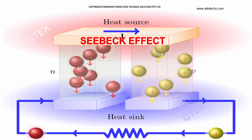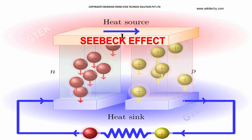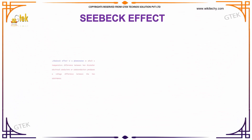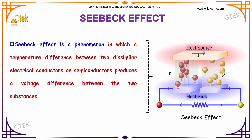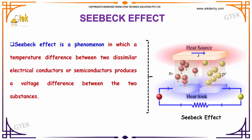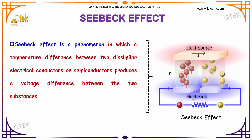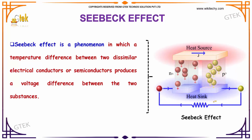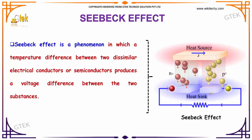Now we will talk about the Seebeck effect. What is the Seebeck effect? It's a phenomenon in which a temperature difference between two dissimilar electrical conductors or semiconductors produces a voltage difference between the two substances. That's referred to as the Seebeck effect.